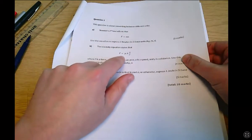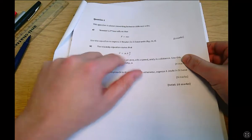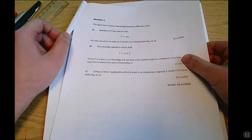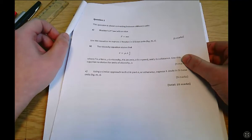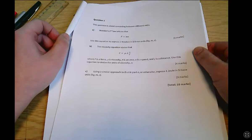f equals mu a and then u over y and we're told what each of f, mu, a, u and y are. And we're asked to derive the units of viscosity mu.